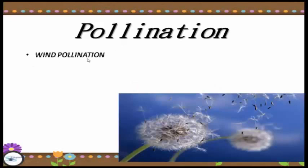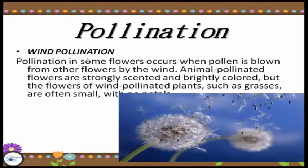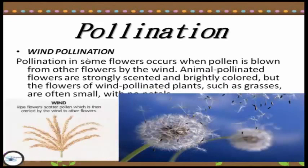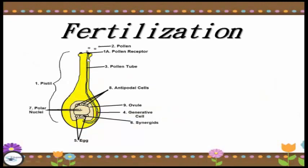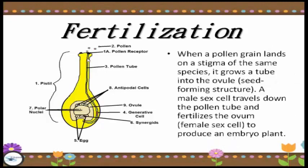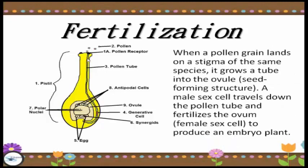The second type of pollination is wind pollination, which occurs in some flowers. Animal-pollinated flowers are strongly scented and brightly colored, but the flowers of wind-pollinated plants such as grasses are often small with no petals. As you can see in the picture, wind pollination occurs when wind carries the pollen to the pollen receptor.